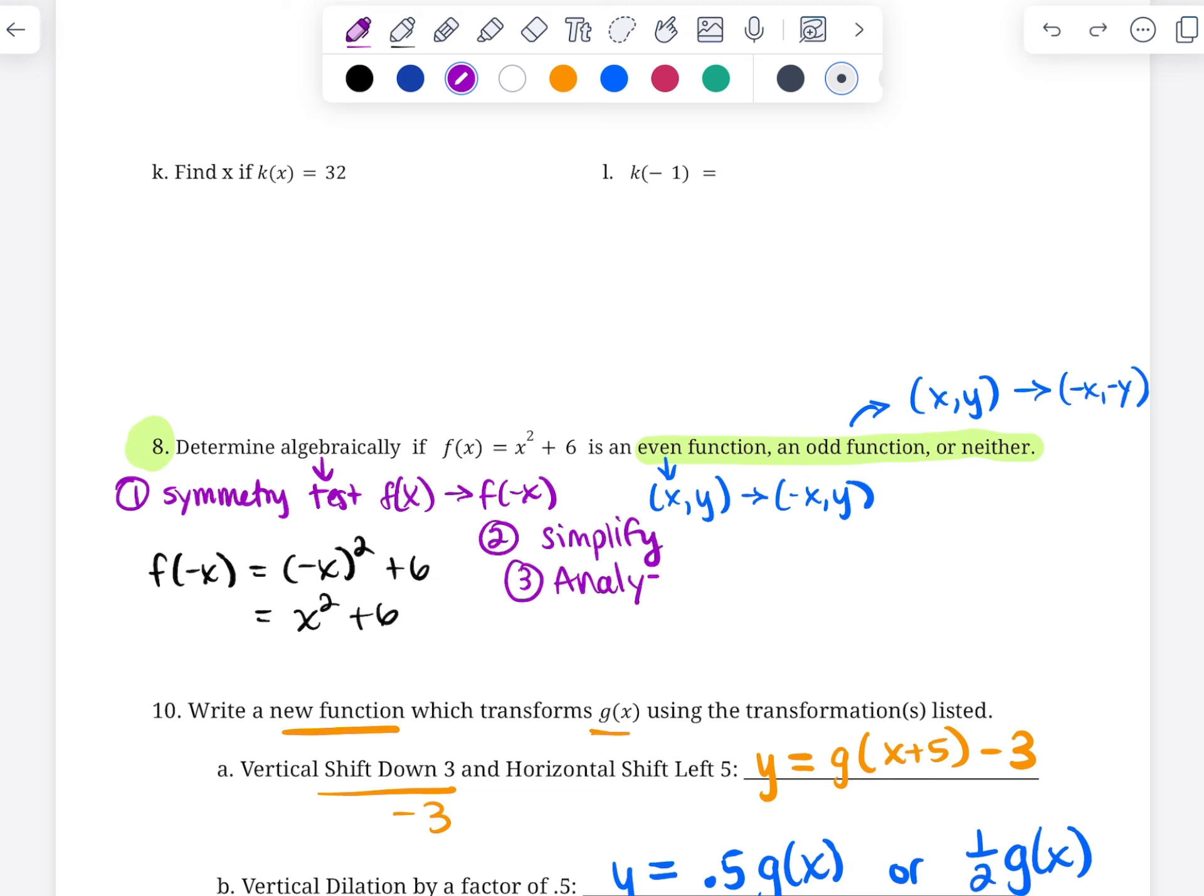And then 3 would be a little bit of analysis. So analyze. So is the function that I got, x² + 6, is it the same? Same, and the answer is yes. So same means we are even. If I had gotten a completely opposite function, then that would mean I am odd. And if I'm some like combination, then I'm neither. So that is just a quick refresher on even, odd, and neither functions.